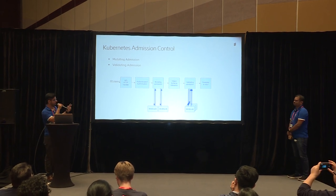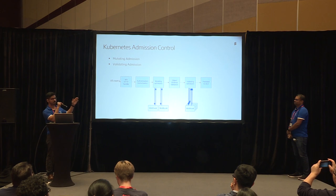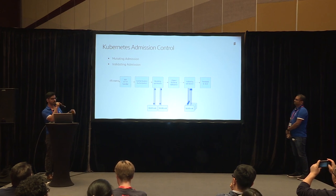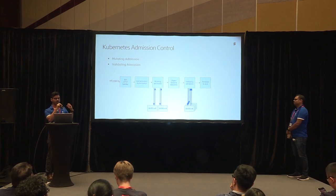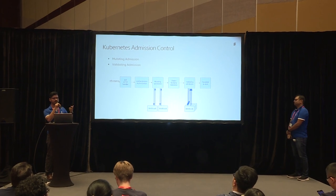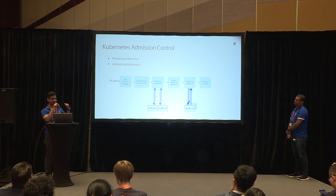Once you add the webhook filter, the requests coming to the Kube API server will automatically get routed to the webhook, and via the webhook you can configure Keystone, which will do the authentication and authorization for you. There are two parts to the admission controller: the mutating admission and the validating admission. The mutating admission is basically an interceptor — it intercepts any request that comes in, ensures that it is valid, and if it is valid, it sends for validation where it validates the token, whether it's a valid user with a valid role, and then sends the response back to the client.